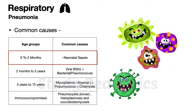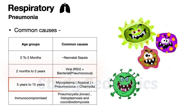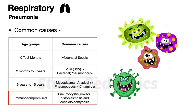For 2 months to 5 years, the most common causes are viral and bacterial, with RSV being the most common. For 5 to 15 years, atypical organisms are also common along with pneumococci. In immunocompromised patients, Pneumocystis jirovecii, histoplasmosis, and coccidioidomycosis are common opportunistic organisms.